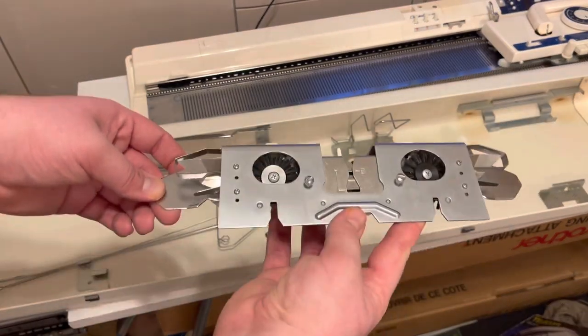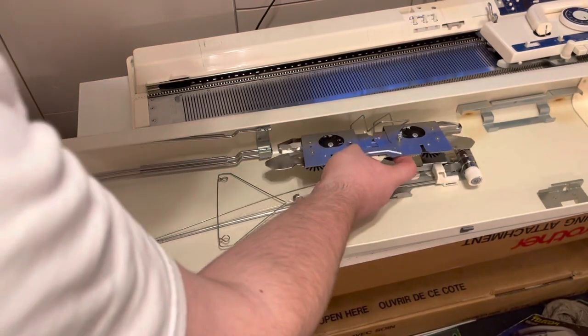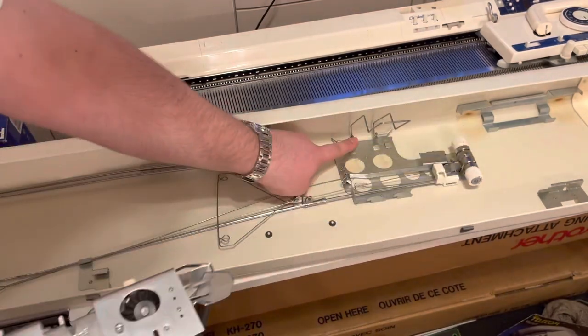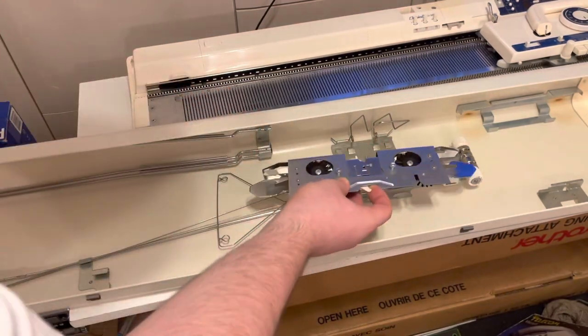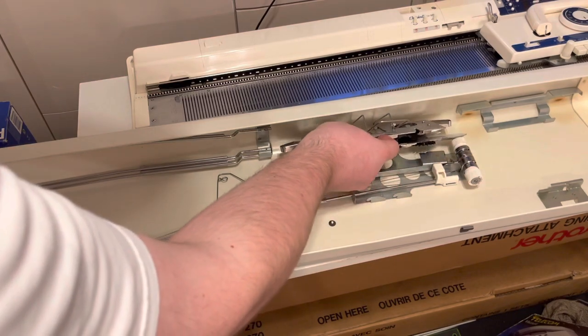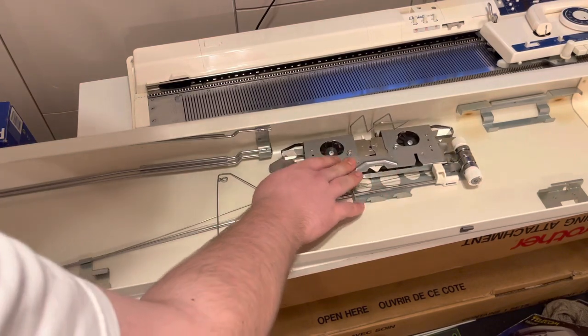The sinker plate fits back in this direction. You see where those two loops are? It sits at an angle in there and it'll sit flat.